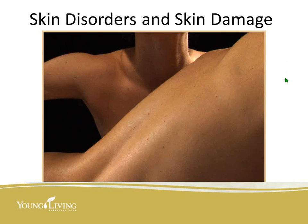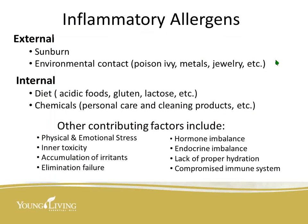Let's talk about skin disorders and skin damage. External inflammatory allergens include sunburn, where the skin gets inflamed and damaged. You can get this from environmental contact — some people are allergic to metals and jewelry, getting an inflammatory reaction. Poison ivy and poison oak are good examples. Some insect bites also give you an allergic reaction.